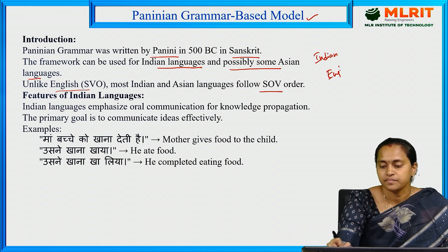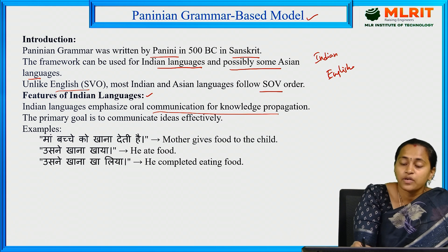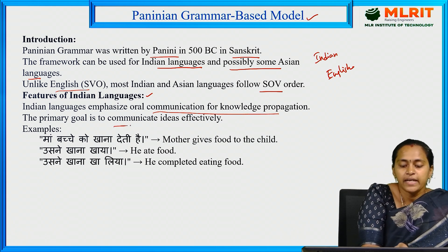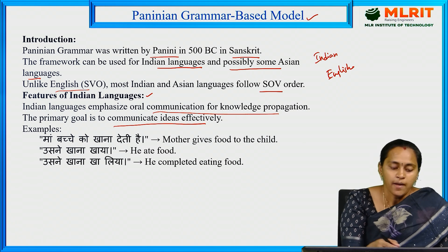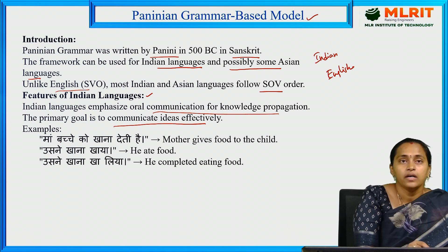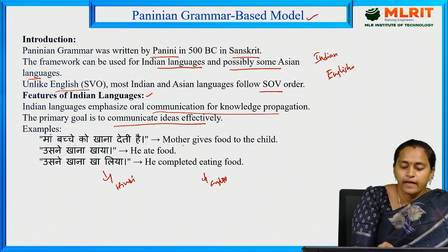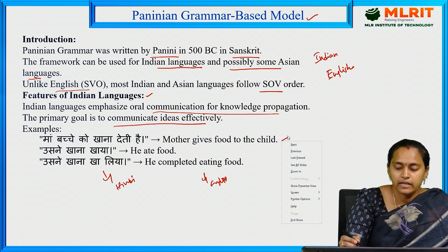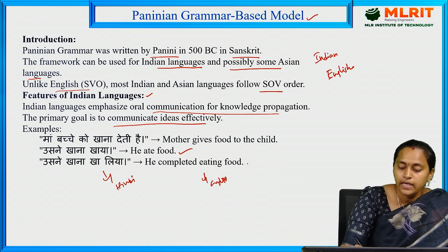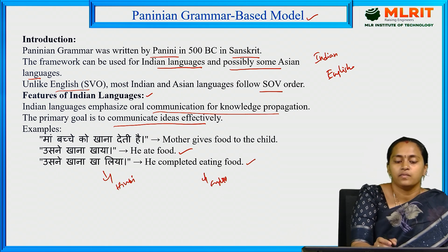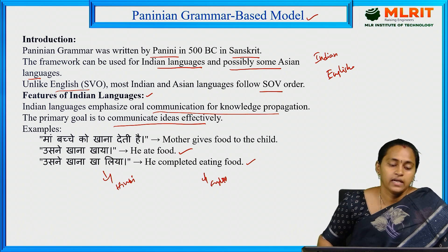In Paninian grammar, we use Karka theory. Karka means case relations — the relations in Paninian grammar. In Telugu, we say karta, karma, kriya. In English equivalents: subject (karta) is the doer of the action; karma is the entity affected by the action; karana (instrument) is by which an action is performed; sampradhana (beneficiary) is the recipient; apadan (separation) is the source or point of departure; and adhikarana (locus) is the location where the action happens.